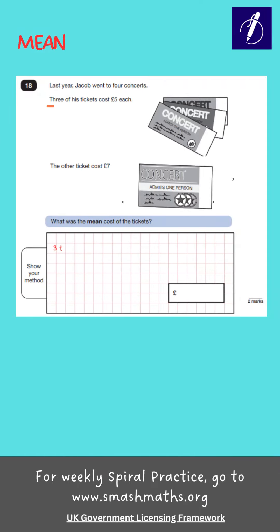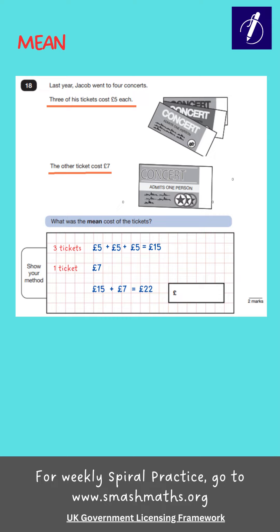Three tickets cost £5 each and one ticket costs £7. So the price of all four tickets is £22.